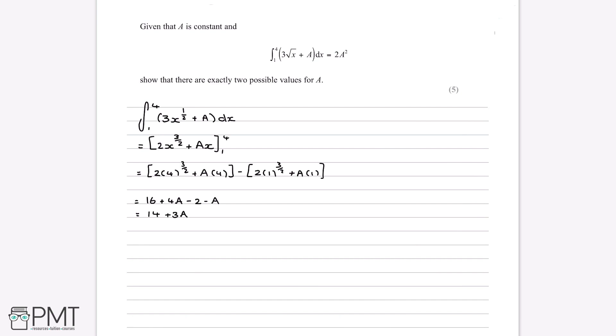Now in the question, we're told that this is equal to 2a squared. So if we write this out, we now will end up with an equation that we can solve. So 14 plus 3a equals 2a squared. And therefore, if we take away 3a and 14 from both sides, 2a squared minus 3a minus 14 is equal to 0.